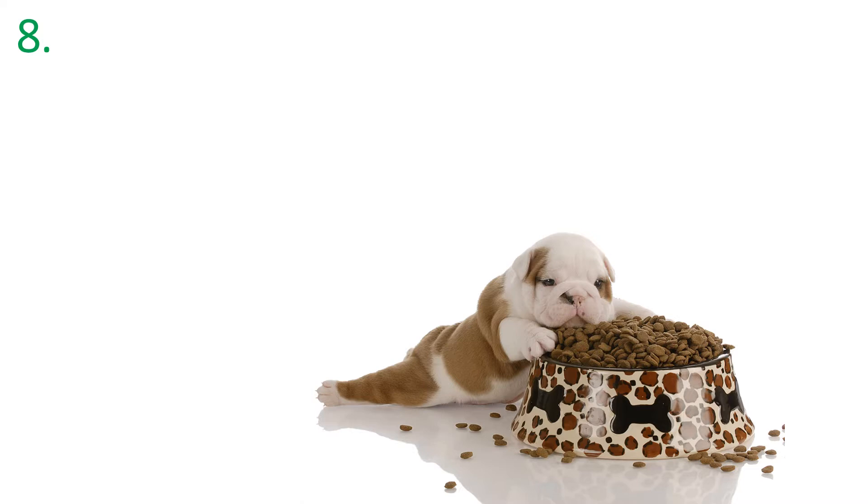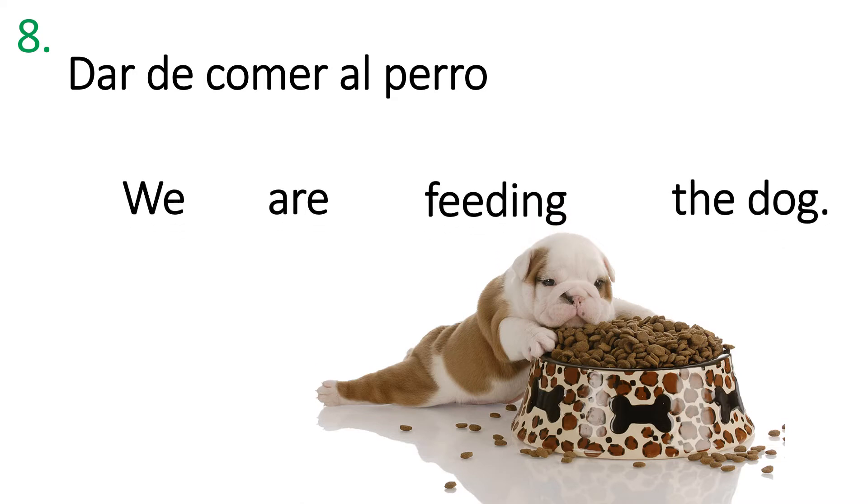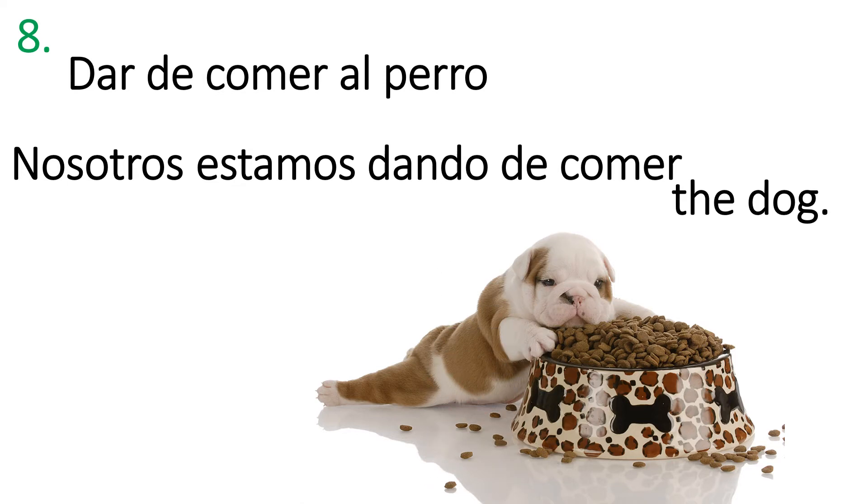Número ocho. To feed the dog. Here's a hint. It's a phrase. To give to eat the dog is what you're saying. That's it. Dar de comer al perro. You could feed other things too. Dar de comer al gato. Dar de comer a la niña. To feed the cat. To feed the child. And so forth. Give me this sentence. We are feeding the dog. Pause and write it down. All right. Let's check it. Nosotros estamos dando de comer al perro. And there you see that personal a again. We're giving food to the dog is what we're saying.